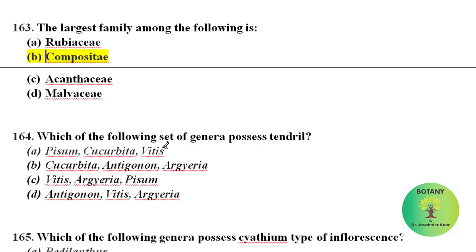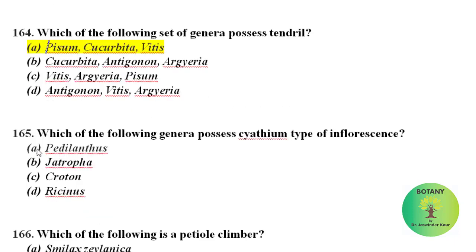Which of the following sets of genera possesses tendrils? Tendrils are present in Pisum, Cucurbita, and Vitis. All three of these genera possess tendrils.